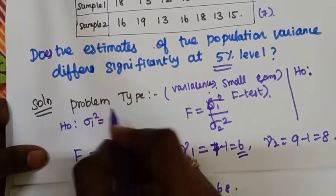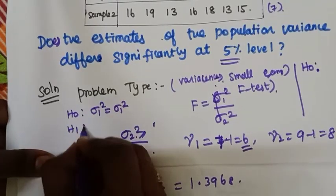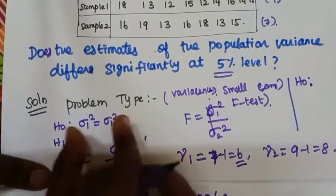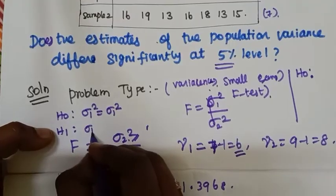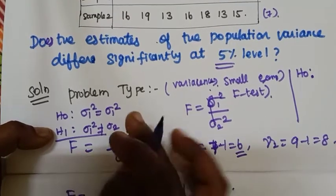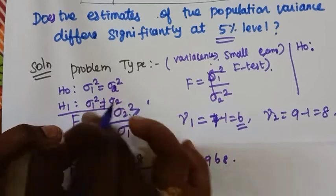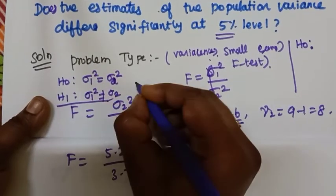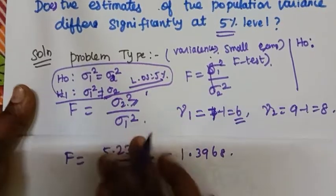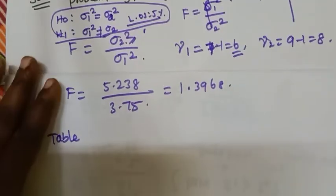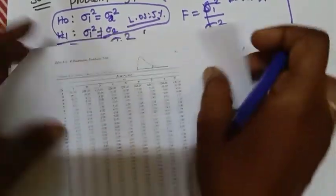There is no difference between the two samples. H0: sigma1 squared equals sigma2 squared — there is no significant difference between the two variances. H1: there is a significant difference between the two variances. The level of significance is equal to 5%.